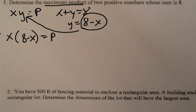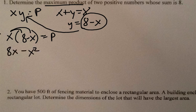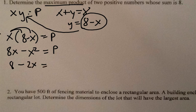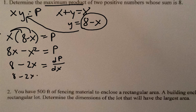We find the maximum or the minimum by setting the derivative equal to zero. Before I find the derivative, I'd rather not use the product rule, so I'm going to distribute that x: 8x minus x squared equals p. The derivative of 8x is 8, and the derivative of negative x squared is negative 2x, which equals dp/dx. Setting this derivative equal to zero and solving: 8 minus 2x equals zero, so 8 equals 2x, divide by 2 on both sides, and x equals 4.